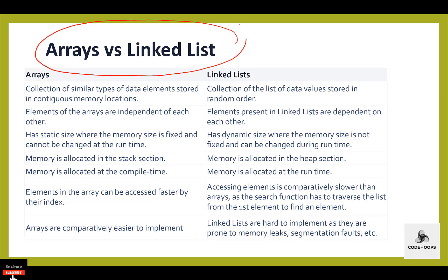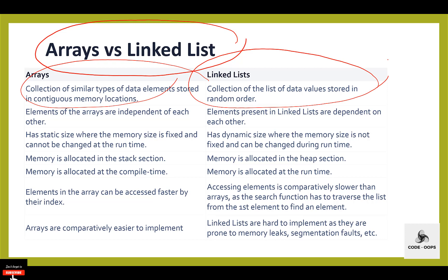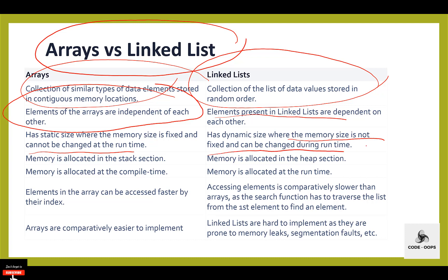Next is the difference between array and linked list. An array is a collection of similar type of data elements stored in a continuous memory location, but a linked list is a collection of data values stored in a random order. The elements of an array are independent of each other, but elements in a linked list are dependent on each other. An array is a static data structure where memory size is fixed and cannot be changed at runtime, but in a linked list, dynamic size is used where memory size is not fixed.